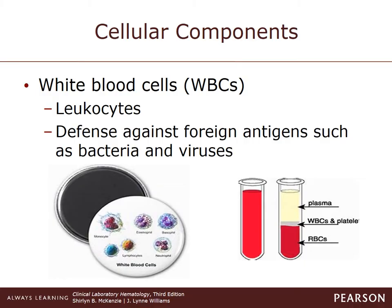They get their name because they are nearly colorless in any unseen cell suspension. There are five types of white blood cells: monocytes, eosinophils, neutrophils, lymphocytes, and basophils, and we will discuss them in the next slides.